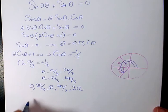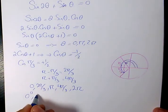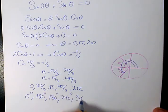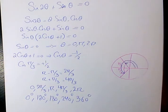And if I want to write in terms of degrees: 0 degrees, 120 degrees, 180 degrees, 240 degrees, and 360 degrees. So these are the final answers.